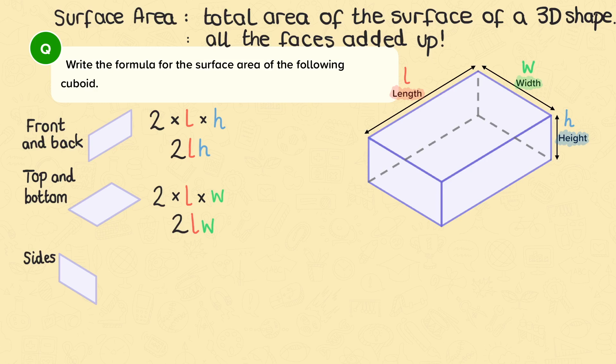To find the sides, we multiply the width by the height, which is W times H. As there are also two of these faces, we need to times that by 2. 2 times W times H, or 2WH.